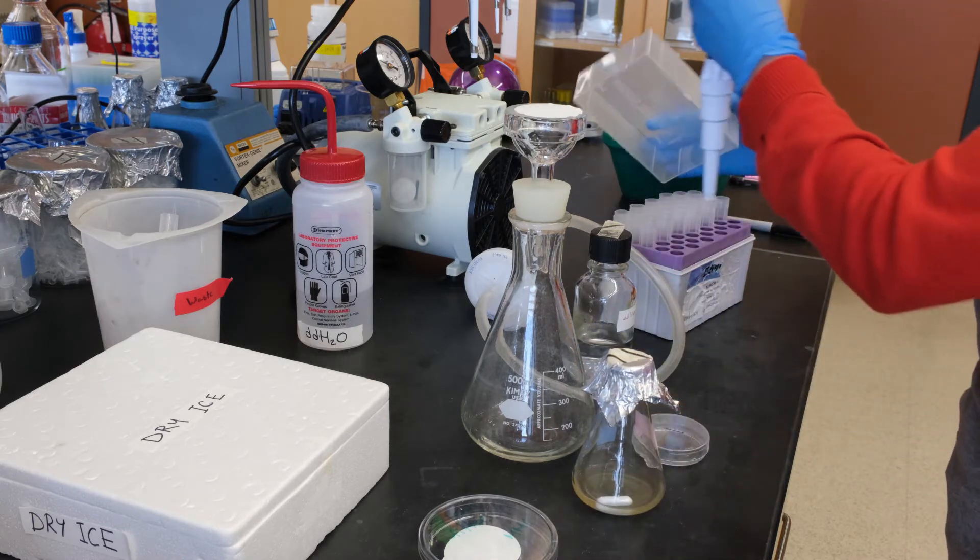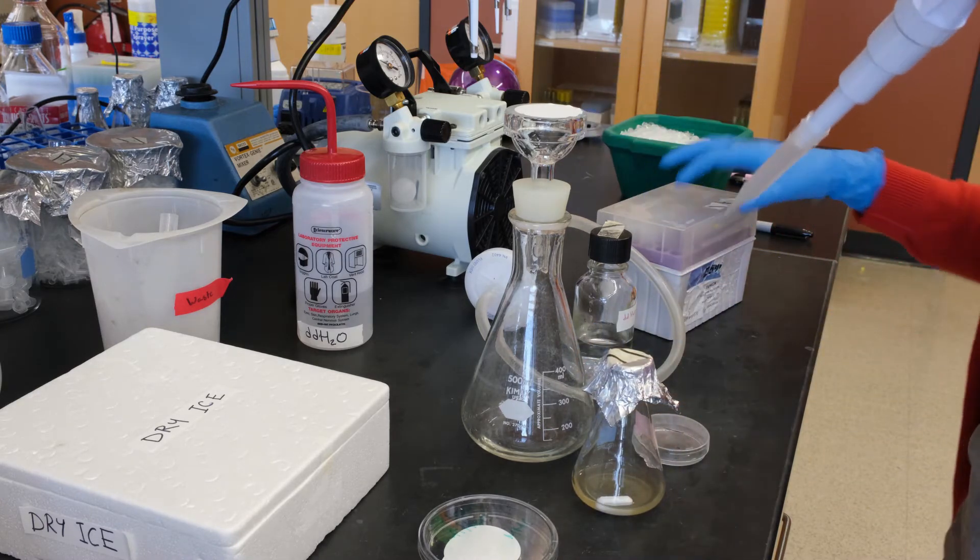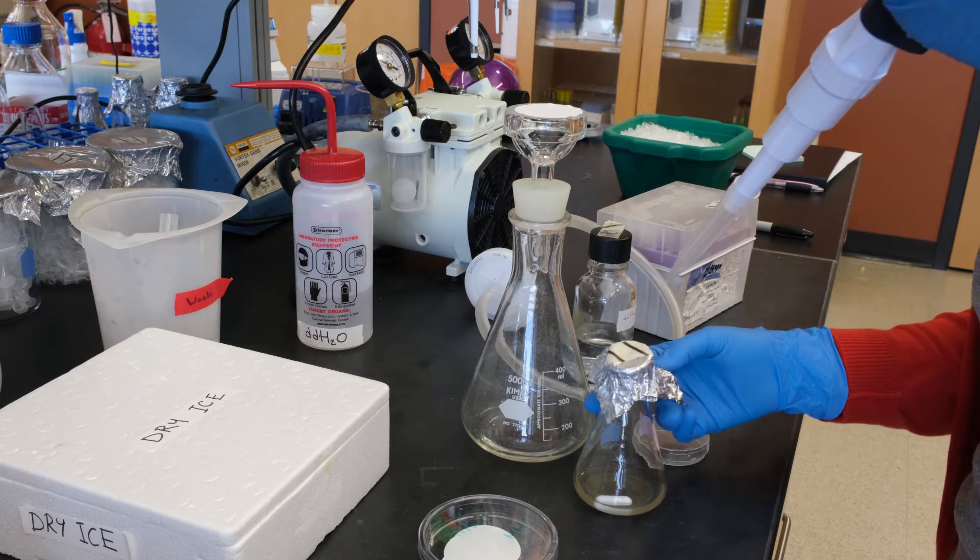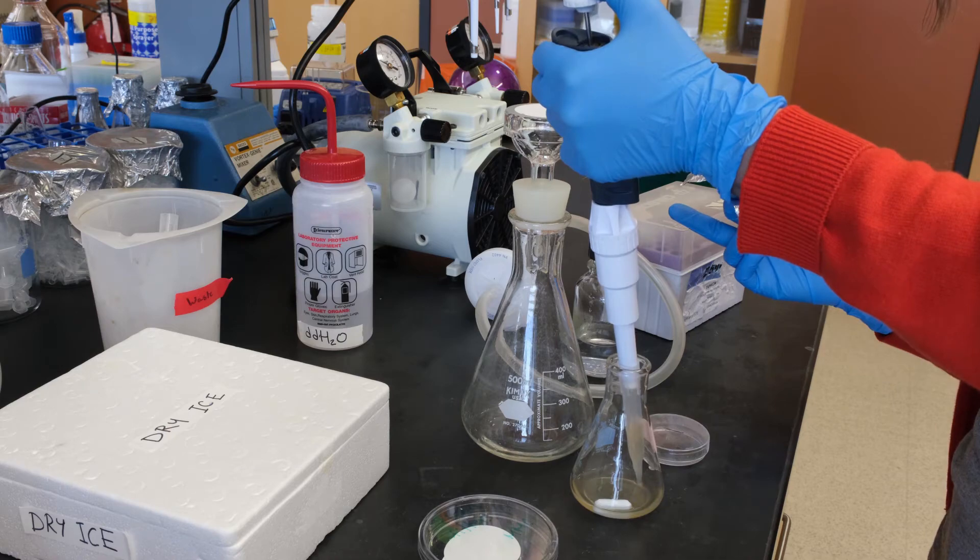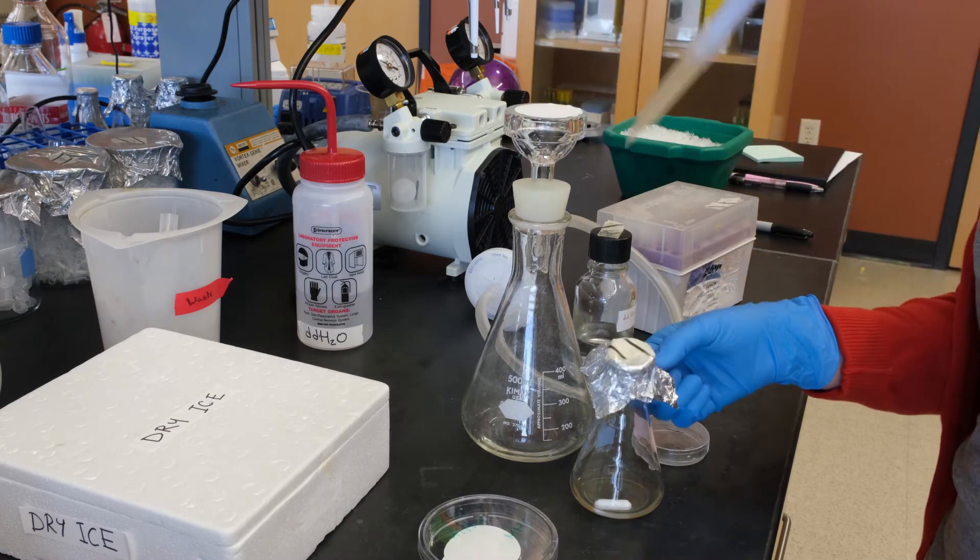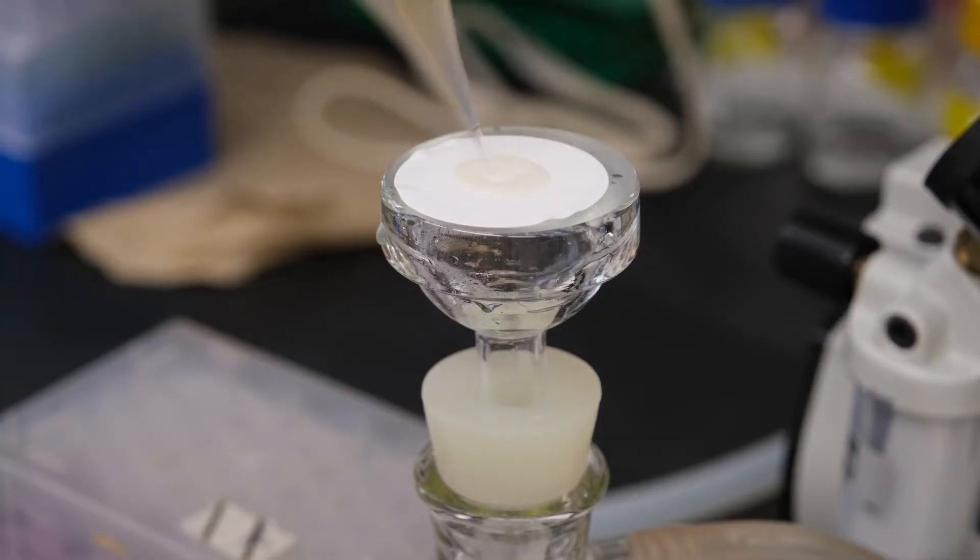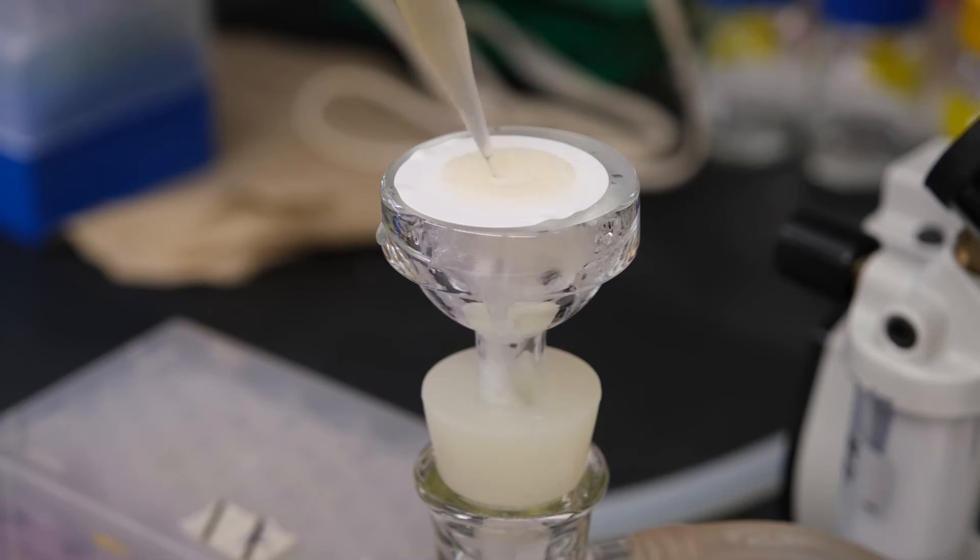Pipette five mils of bacterial culture onto the center of the filter disc. Be careful that none of the culture goes over the side of the funnel or past the edge of the filter disc, ensuring that you collect metabolites from exactly five mils of culture.